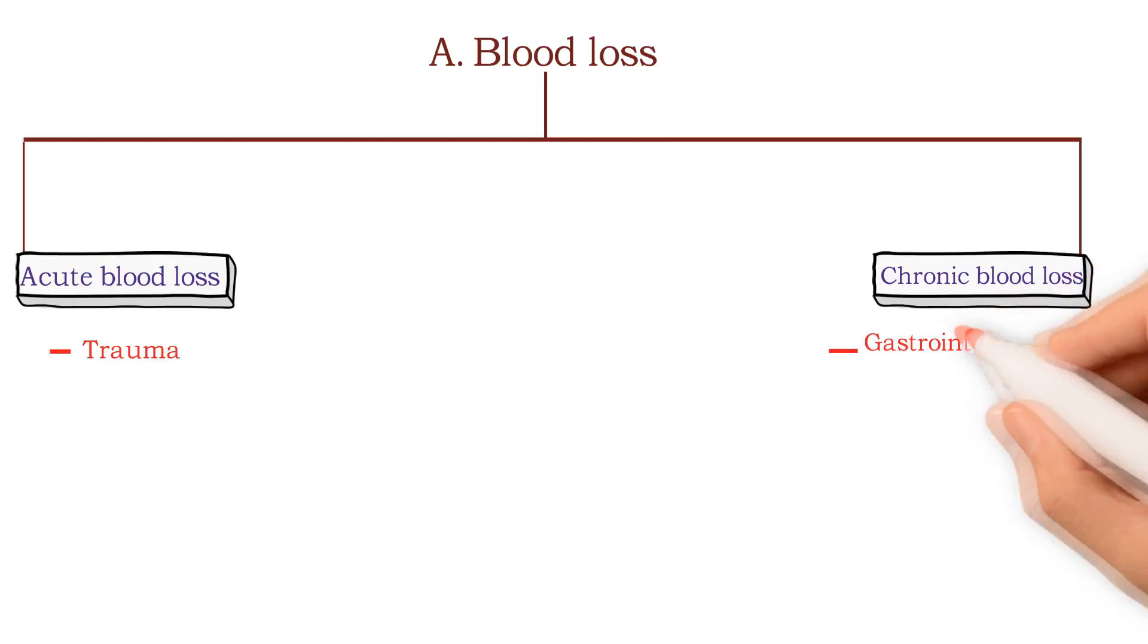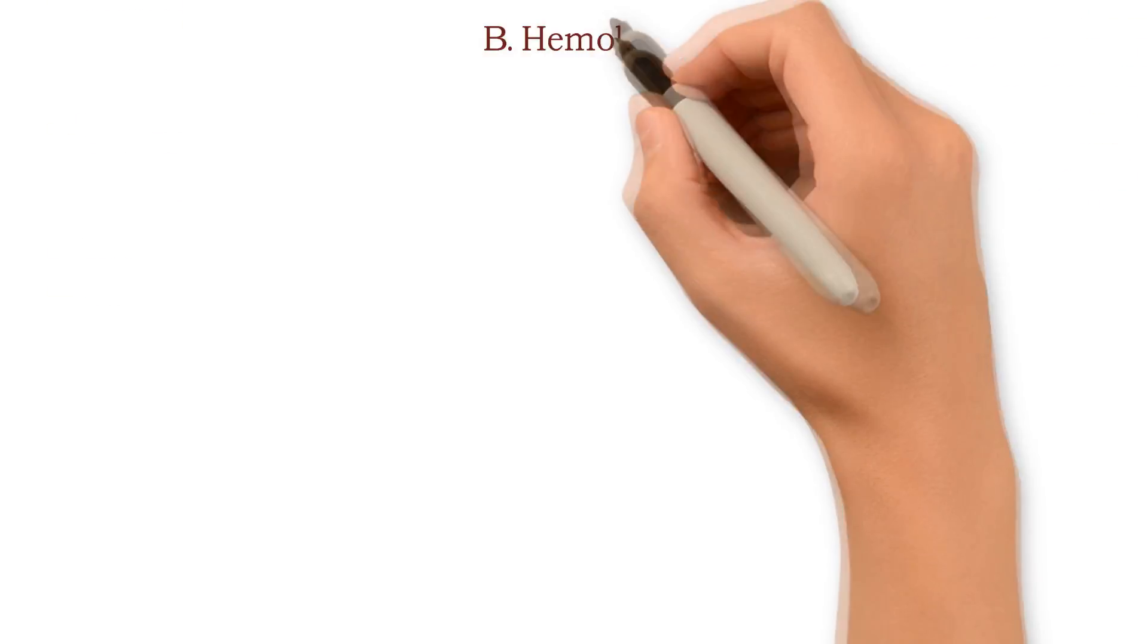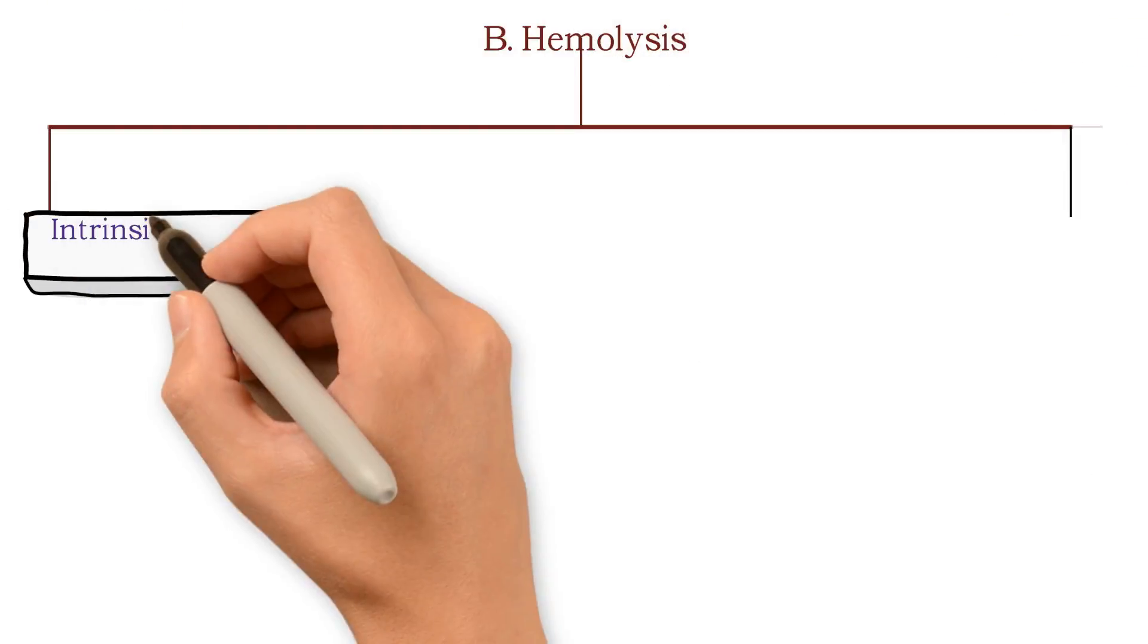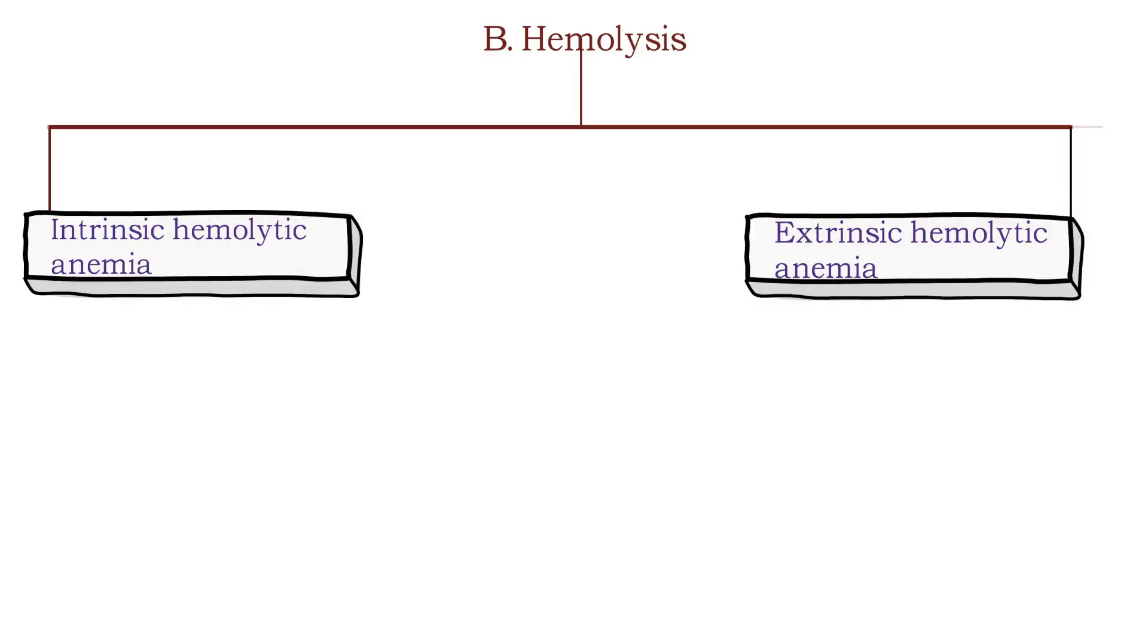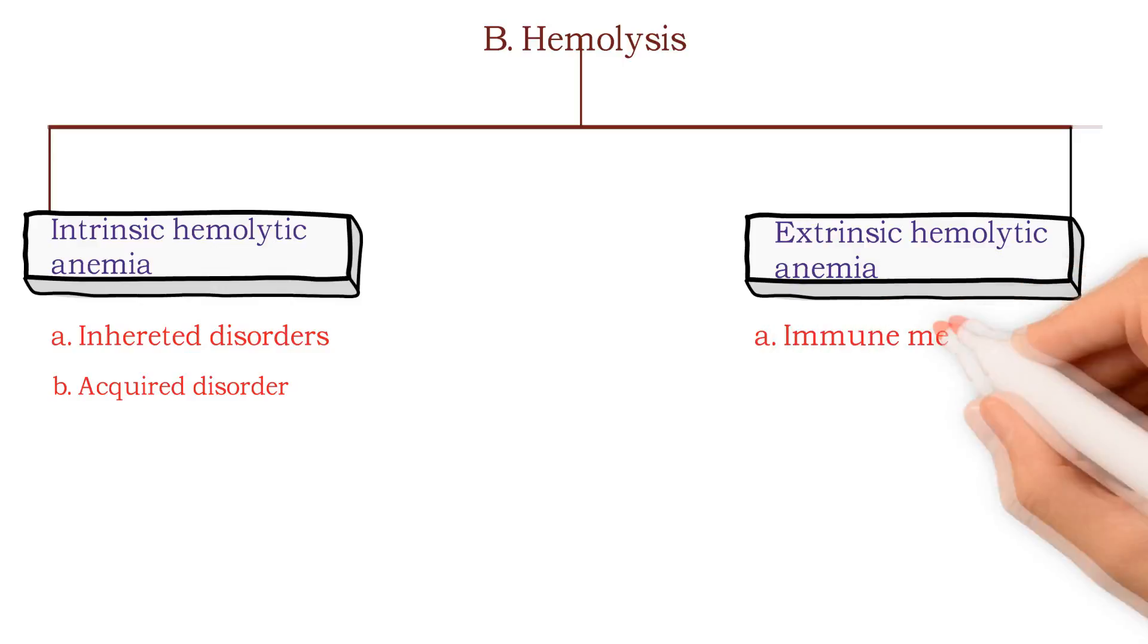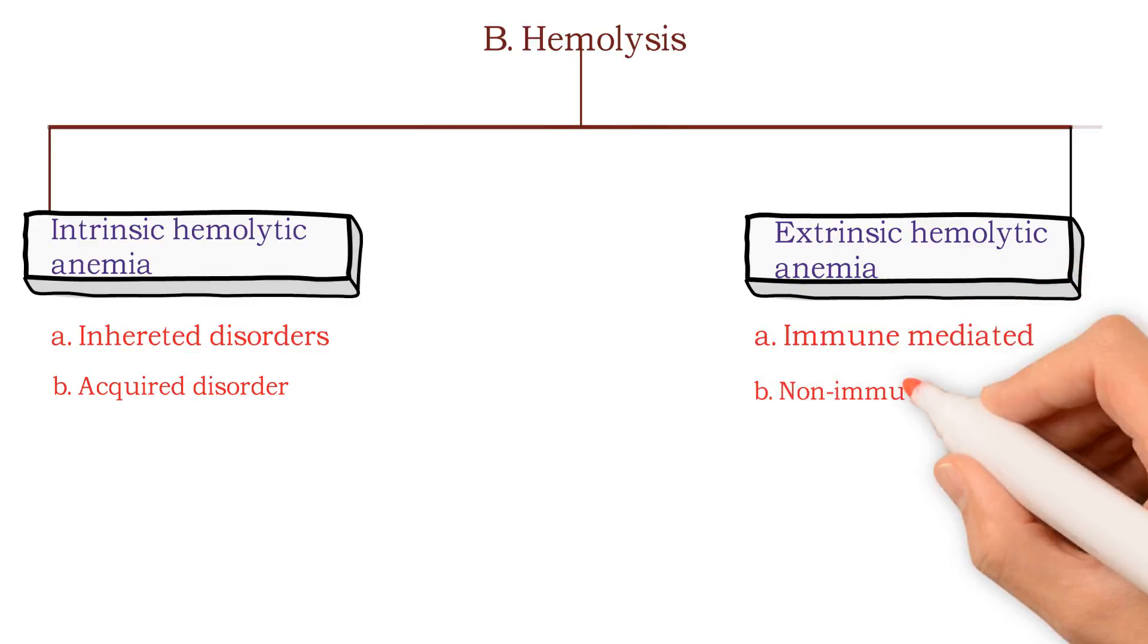Hemolysis: there are intrinsic hemolytic anemia and extrinsic hemolytic anemia. Intrinsic hemolytic anemia includes inherited disorders and acquired disorders, whereas extrinsic hemolytic anemia includes immune mediated and non-immune mediated. Let us discuss briefly about intrinsic hemolytic anemia, which means defect within RBC.